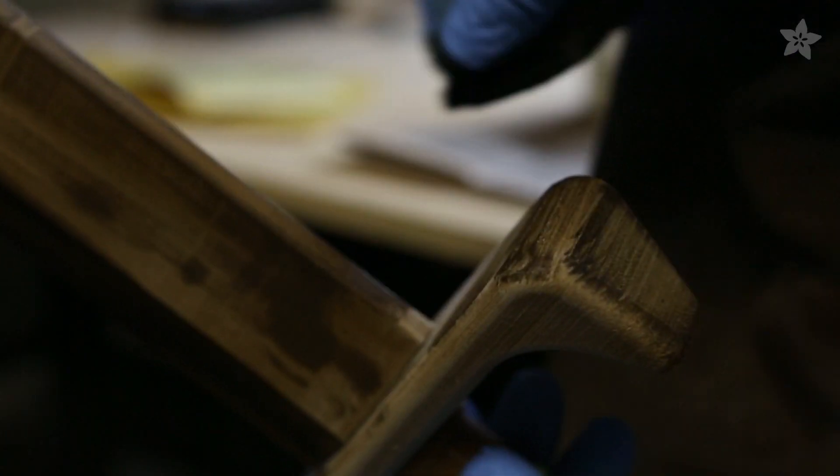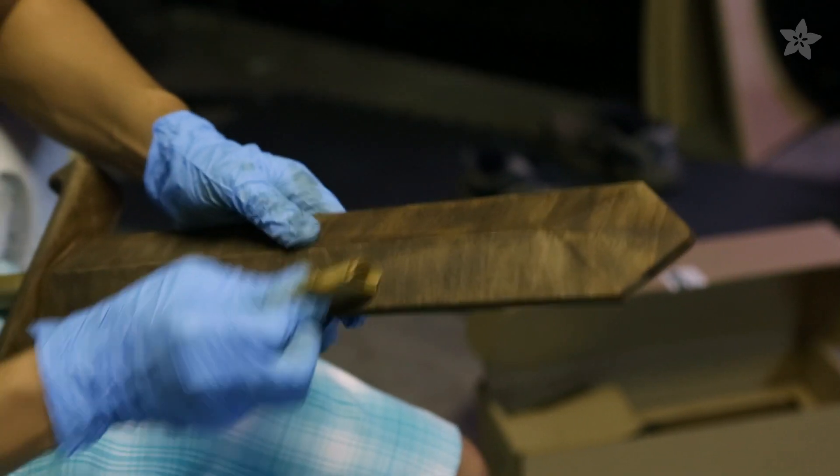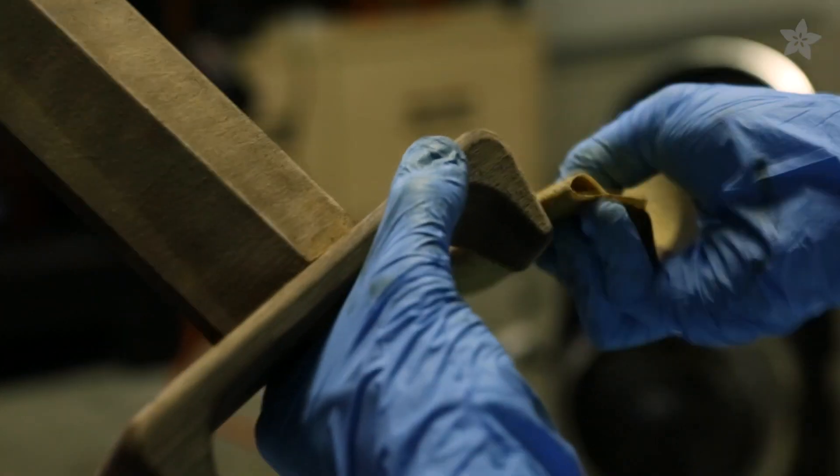Let it dry for about 5 minutes and then use 80 grit sandpaper to remove any blotches. This will also help you get that weathered look.